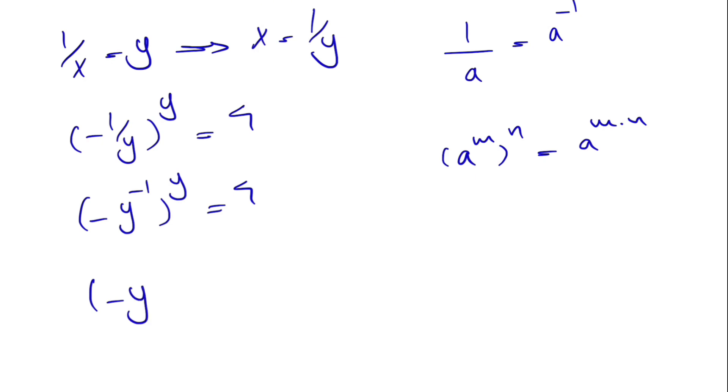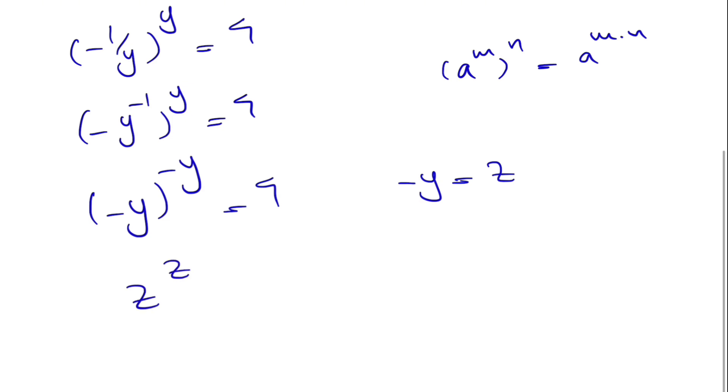We will have minus y to the power of minus y is equal to 4. Let's put our minus y as z and what we're going to get is z to the power of z is 4, which we know is 2 to the power of 2, and that means our z is equal to 2.